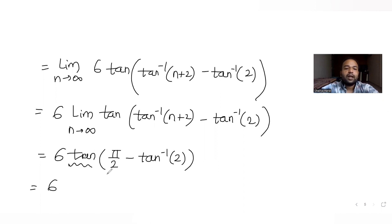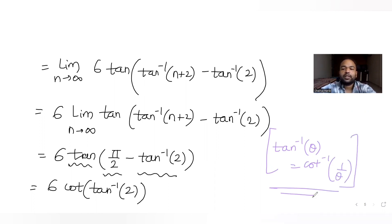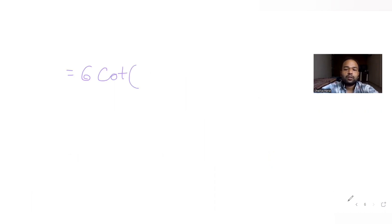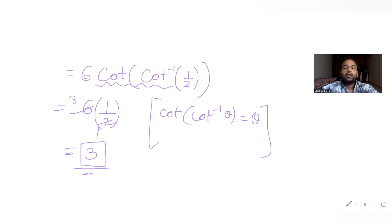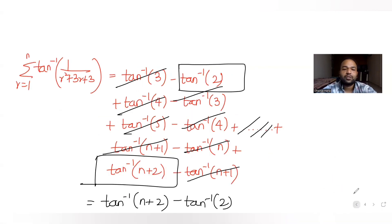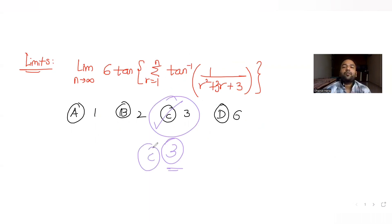We know that tan(π/2 − θ) equals cot(θ). So 6 tan(π/2 − tan inverse(2)) equals 6 cot(tan inverse(2)). Since tan inverse(2) can be written as cot inverse(1/2), we have cot(cot inverse(1/2)) which equals 1/2. Therefore 6 times 1/2 equals 3. The answer to the question is 3, which corresponds to option C.